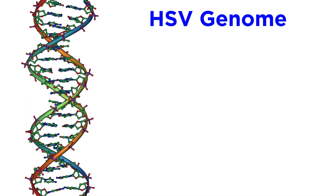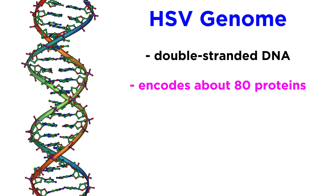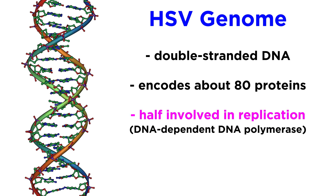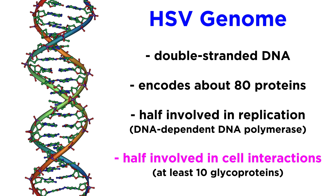The double-stranded DNA genome of HSVs encodes somewhere around 80 proteins. About half of these are involved with replication, including a DNA-dependent DNA polymerase. The other half control how the virus interacts with host cells and the host's immune response — including at least 10 glycoproteins that serve as viral attachment proteins.